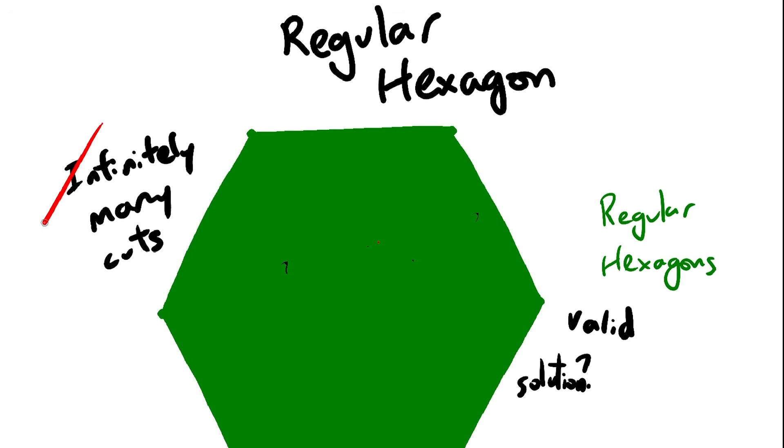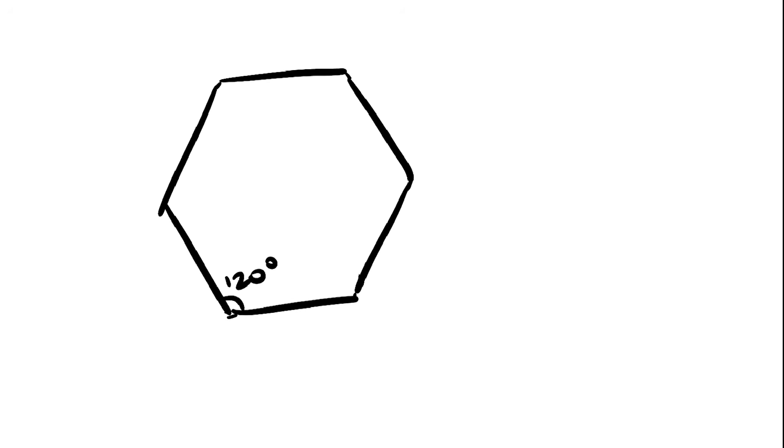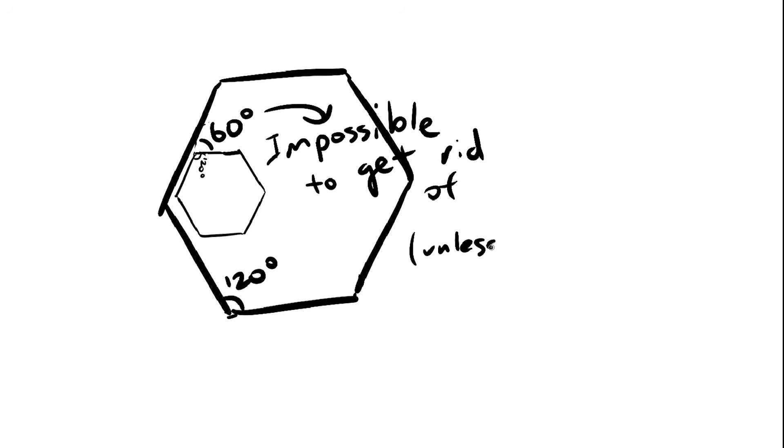Are there any solutions that don't require infinitely many cuts and infinitely many hexagons? Unfortunately, there are not. Regular hexagons only have 120 degree angles, so it's impossible to fit two of them onto a line. In other words, there's no way to get rid of this 60 degree angle. So yes, there are an infinite amount of cuts.